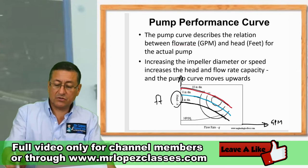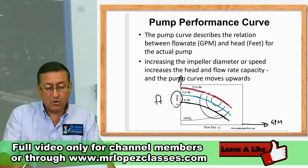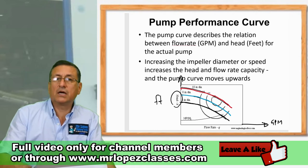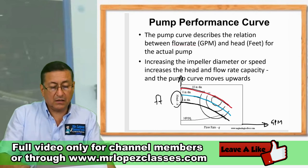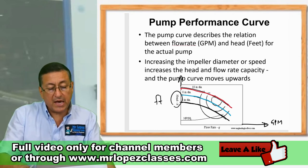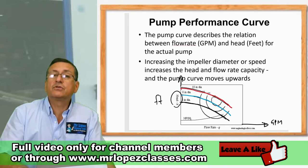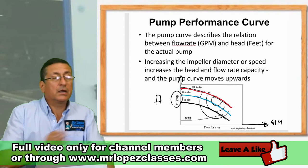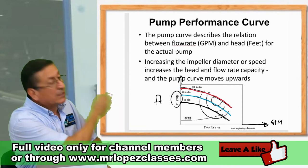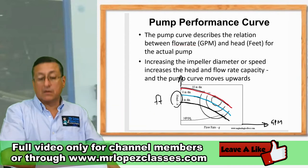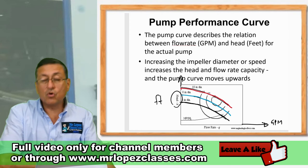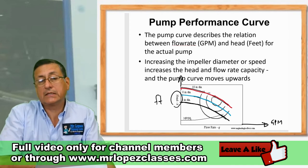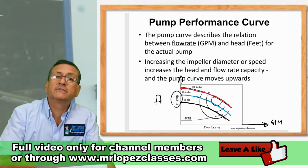On the horizontal axis we have the flow, and on the vertical axis we have the head in feet. Normally the curve behaves like this: more flow means less head. It's that simple.